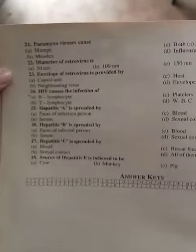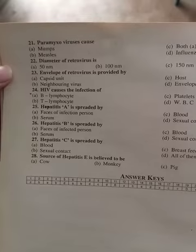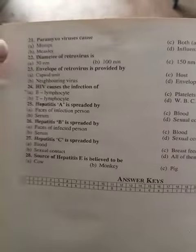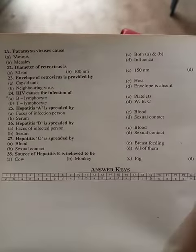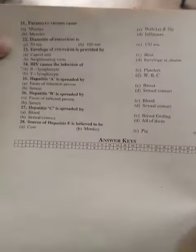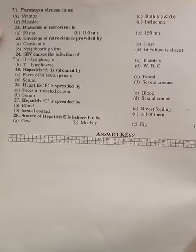Question number 21: paramyxovirus causes measles. Question number 22: the diameter of retrovirus is 150 nanometers.